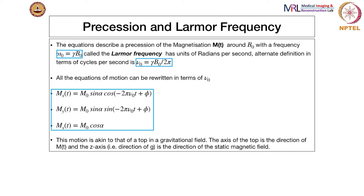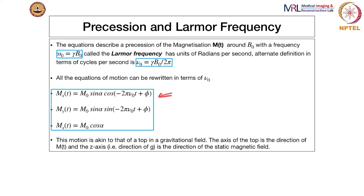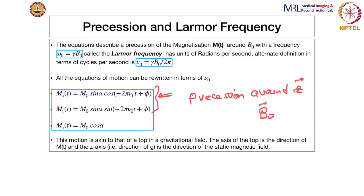This motion is similar to that of a top or a gyroscope in a gravitational field. In this case, the axis of the top is the direction of M, and the z-axis is the direction of the static magnetic field. These equations mean that there is a precession around the z-axis, which is the same as the direction of the B0 field. There is a precession of this magnetization around the direction of the applied static magnetic field.